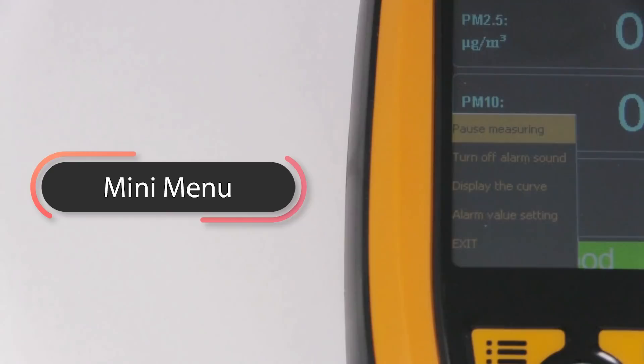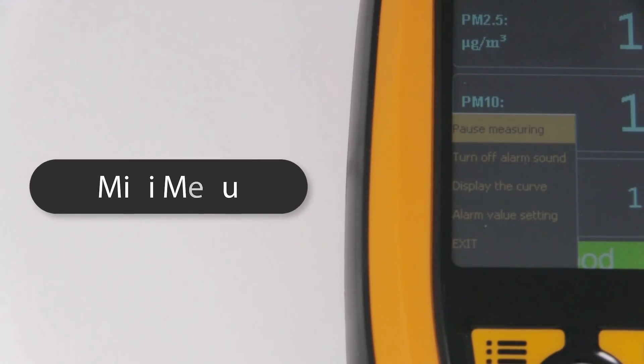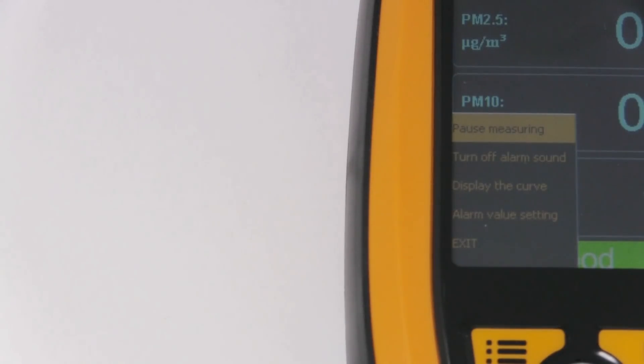Here we have the mini menu. It will be to the bottom left. You can pause. You can turn off alarm sound. Display the curve, which is pretty much just the graph for each one.